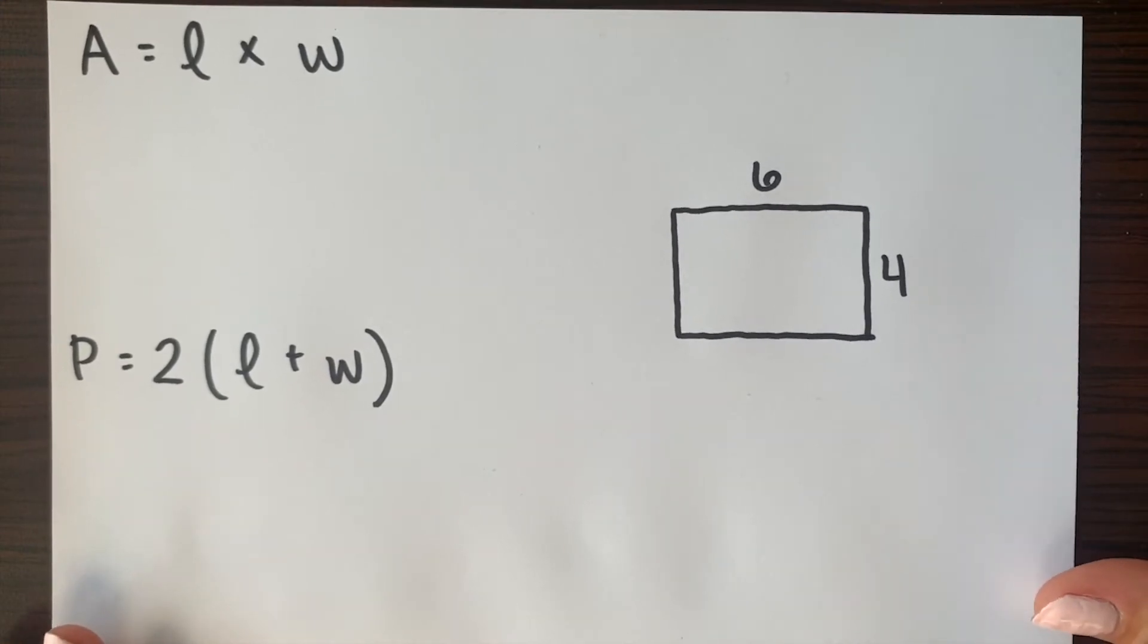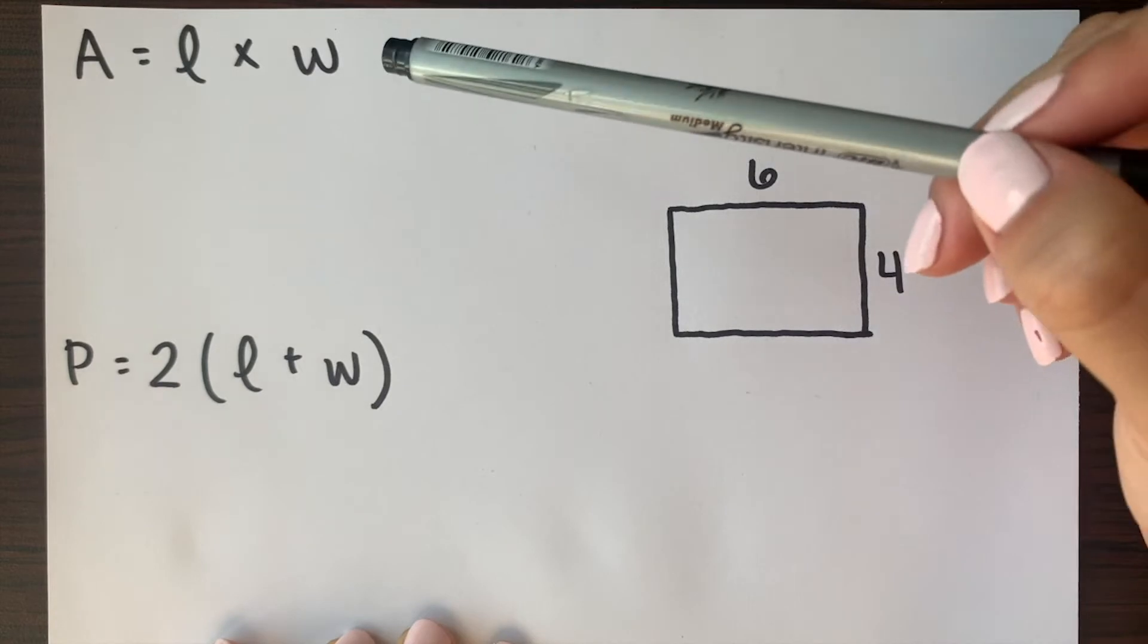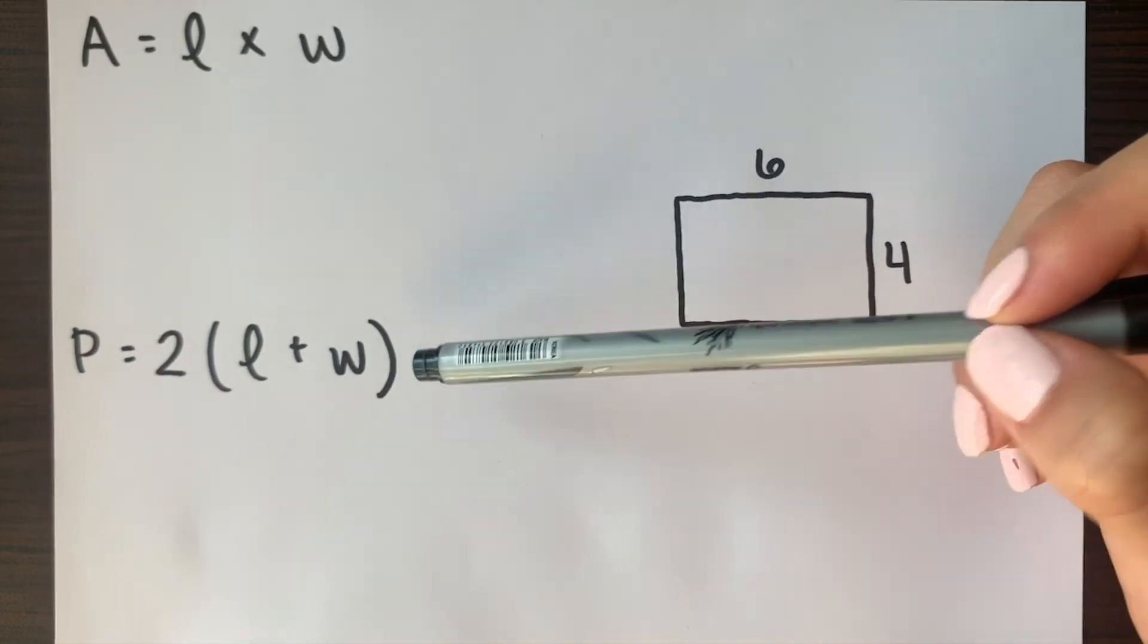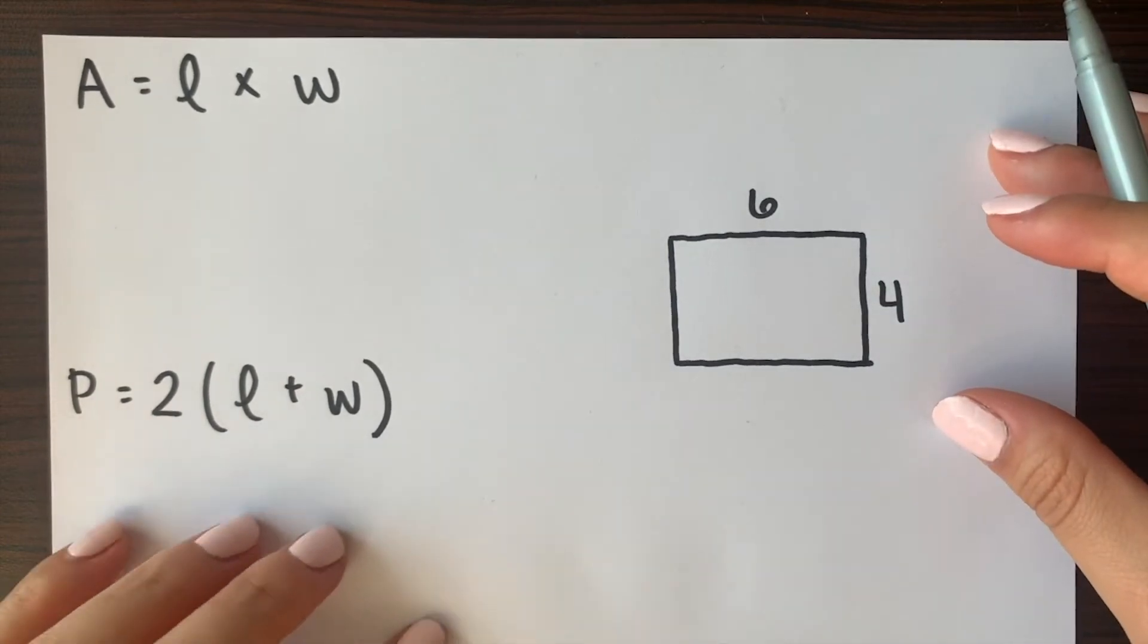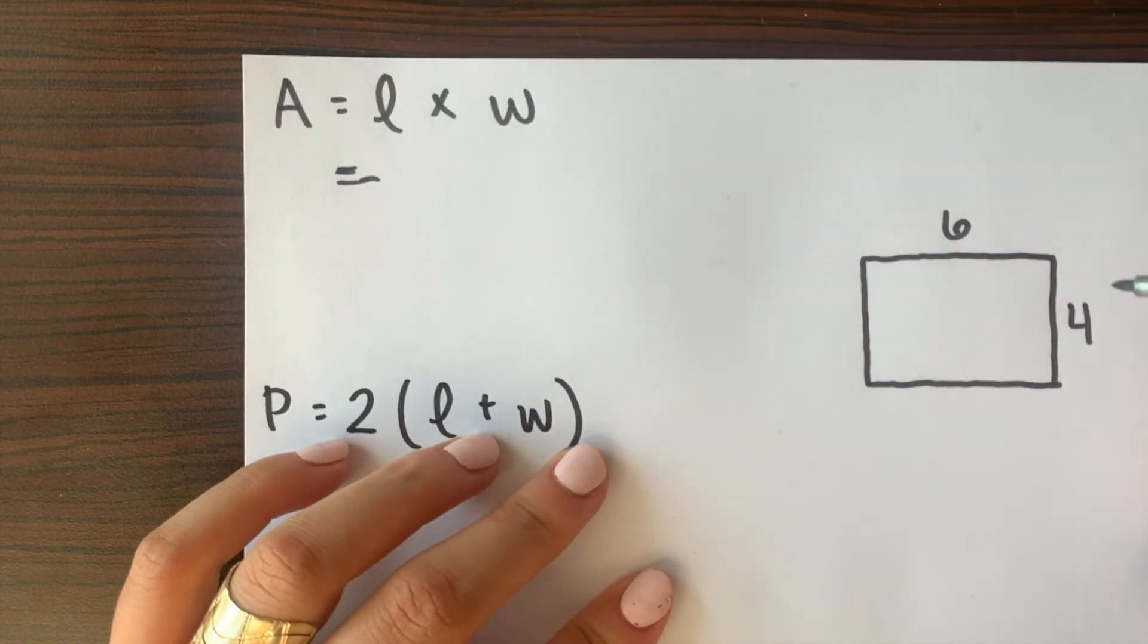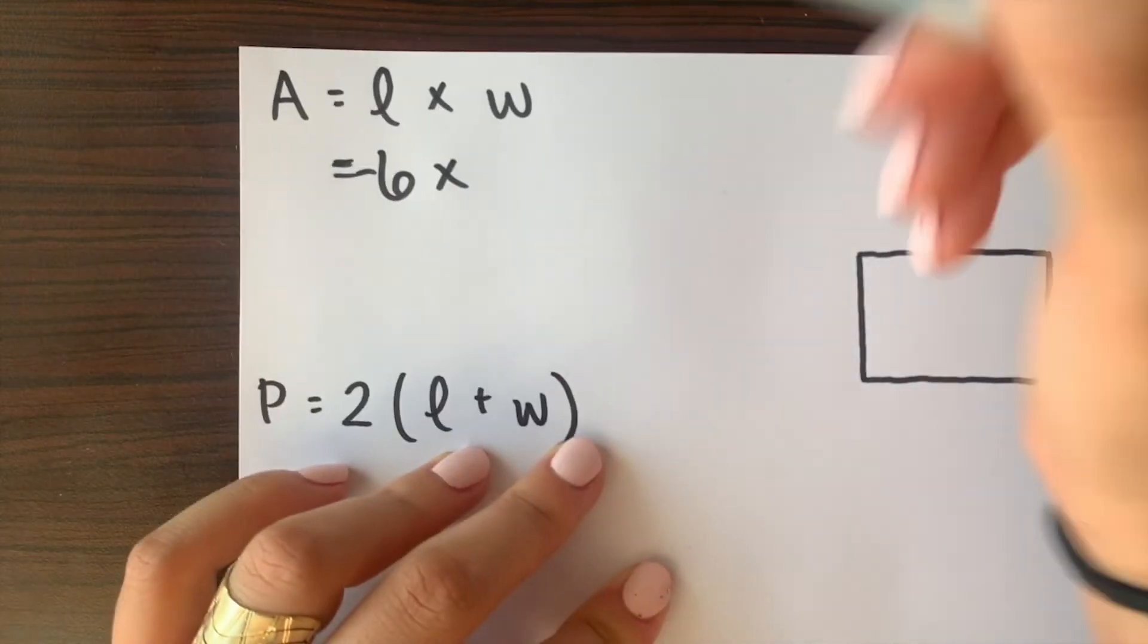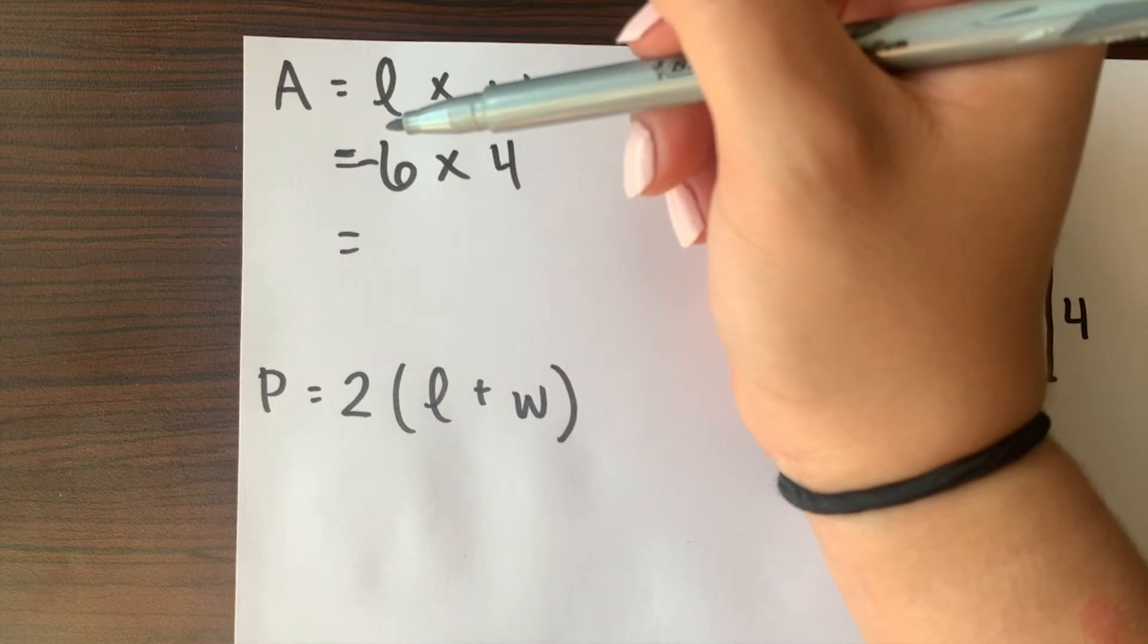For our third and final example here again I went ahead and put down my rectangle with the value for the length and the value for the width. I have my equation for area and I have my equation for the perimeter. So again we can just go back in and plug in our numbers for length and width. Our value for length is 6 times our value for our width which is 4. So 6 times 4 gives us 24.